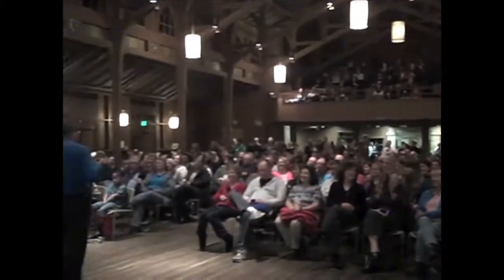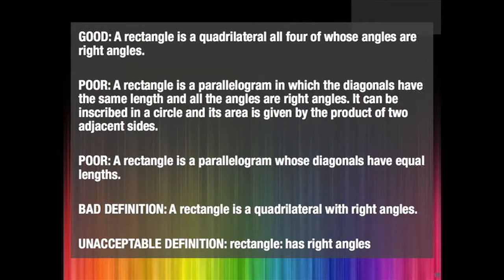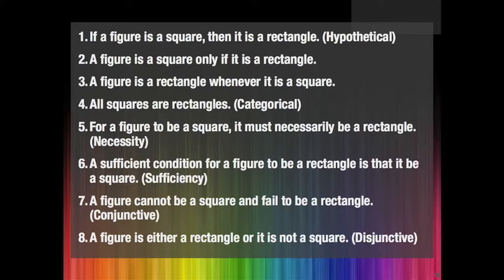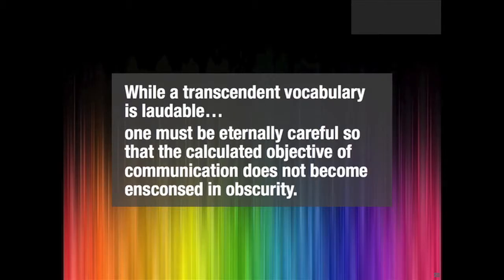So we have to attend to precision. Attending to precision means paying attention to definitions. Here are some examples of how things go when we try to work with definitions. A rectangle is a quadrilateral whose angles are right angles. Even though the next definition has more words, it's not necessarily better. These are eight different ways in which we can state equivalent statements about how rectangles and squares compare. While an ascendant vocabulary is laudable, one must be eternally careful so that the calculated objective of communication does not meet obscurity.